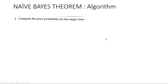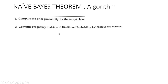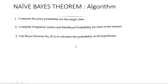Let's learn the algorithm. The algorithm of Naive Bayes theorem has the following steps. First, you need to compute the prior probability. For what is prior probability, posterior probability, and likelihood probability, please refer to my previous video on Bayesian learning. The second step is to compute the frequency matrix and likelihood probability for each feature. The third step is to use the Bayes theorem.